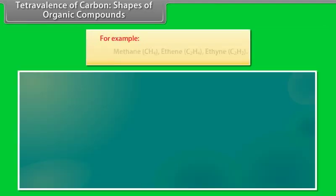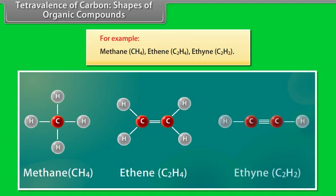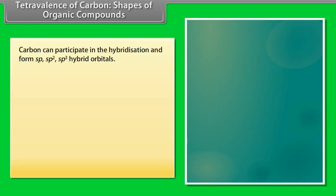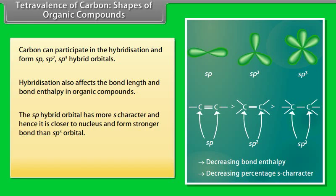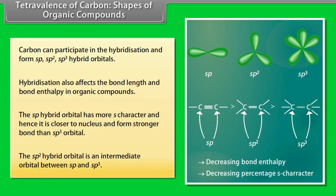As a result, a carbon atom forms 4 covalent bonds by sharing valence electrons with other atoms. This is known as tetravalency of carbon. For example, methane, ethane. Carbon can participate in hybridization and form sp, sp2, sp3 hybrid orbitals. Hybridization also affects the bond length and bond enthalpy in organic compounds. The sp hybrid orbital has more s character and hence it is closer to the nucleus and forms a stronger bond than sp3 orbital. The sp2 hybrid orbital is an intermediate orbital between sp and sp3.